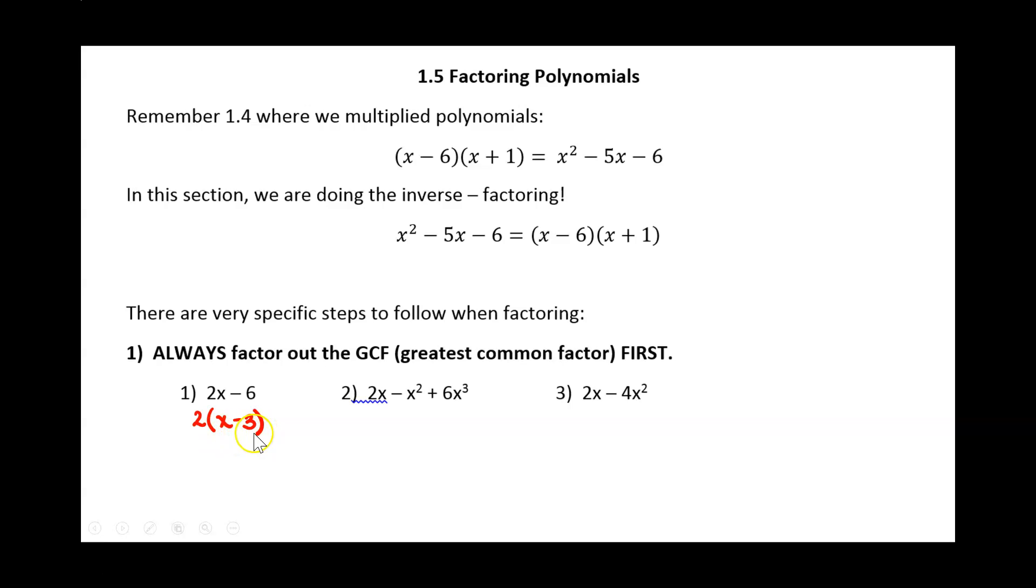And remember the way you find this other factor is you just take each of your terms and divide it by what your greatest common factor was, what you factored out. So 2x divided by 2 leaves me x, and negative 6 divided by 2 leaves me negative 3.